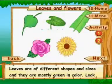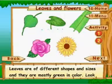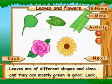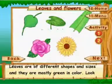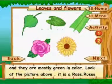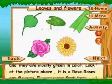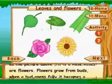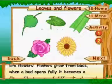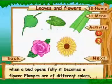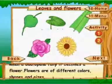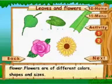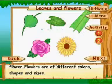Leaves are of different shapes and sizes and they are mostly green in colour. Look at the picture above — it is a rose. Roses are flowers. Flowers grow from buds. When a bud opens fully, it becomes a flower. Flowers are of different colours, shapes and sizes.